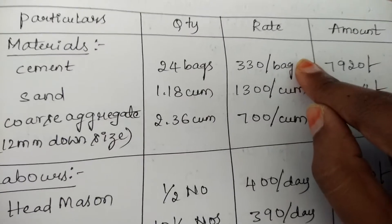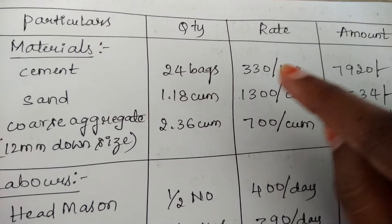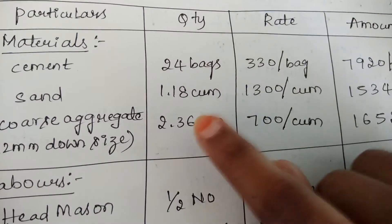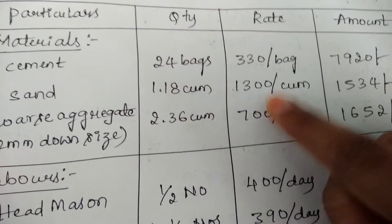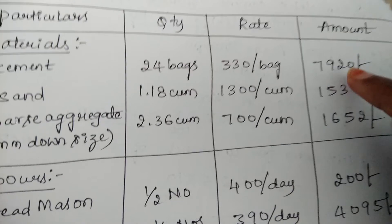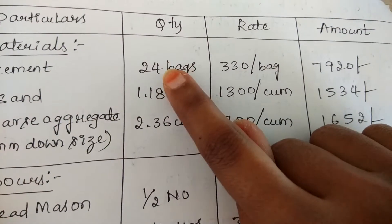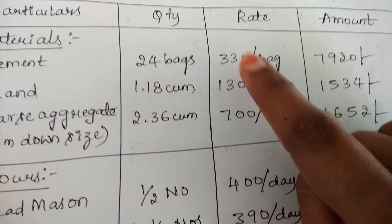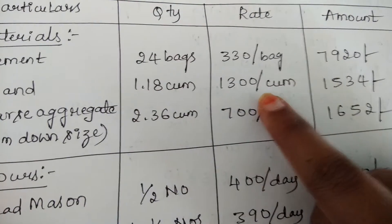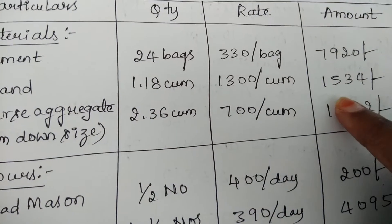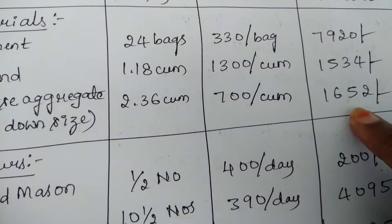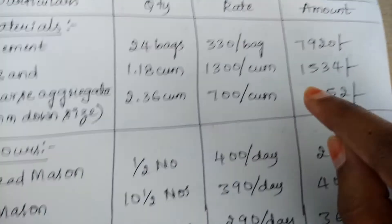Whatever the rate fixed nowadays, that rate we write here. The rate for cement is ₹330 per bag, for sand is ₹1300 per m³, and for coarse aggregate it is ₹700 per m³. For finding the amount we multiply quantity with rate: 24 × 330 = ₹7920; 1.18 × 1300 = ₹1534; 2.36 × 700 = ₹1652. So this gives you the amounts for the materials.